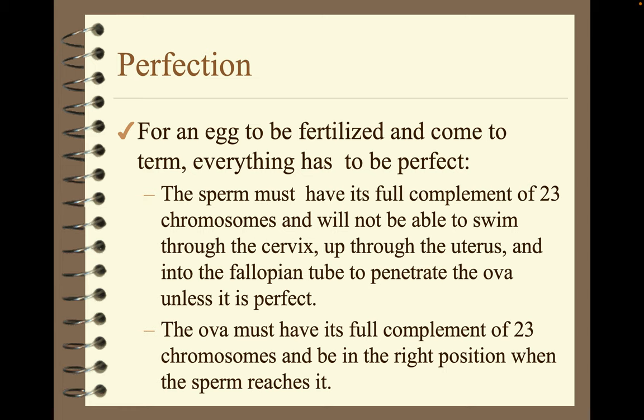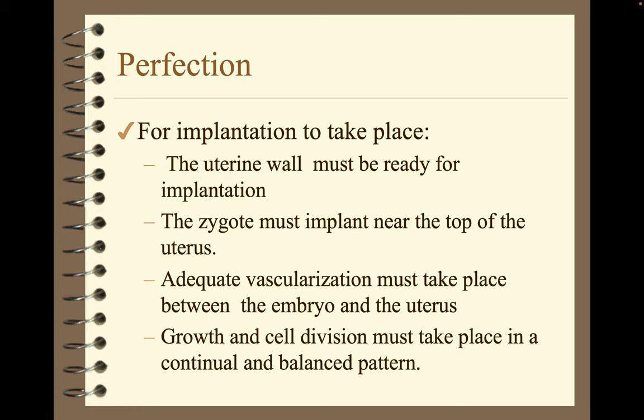For an egg to be fertilized and come to term, everything has to be perfect. The sperm must have its full complement of 23 chromosomes and must be able to swim through the cervix, up through the uterus, and into the fallopian tube to penetrate the ova. The ova must also have its full complement of 23 chromosomes and be in the right position. For implantation to take place, the uterine wall must be ready, the zygote must implant near the top of the uterus, adequate vascularization must occur, and growth and cell division must take place in a continual and balanced pattern.